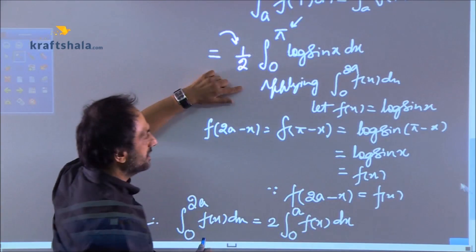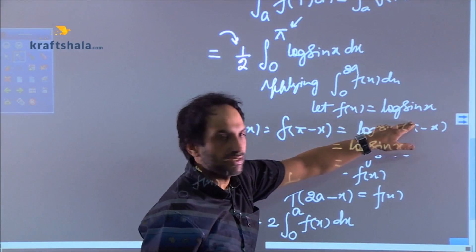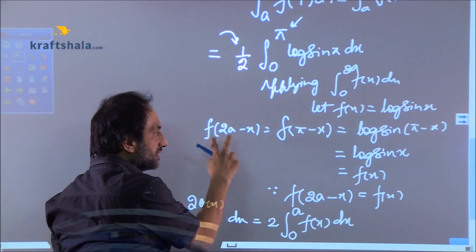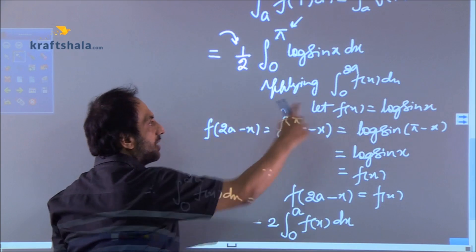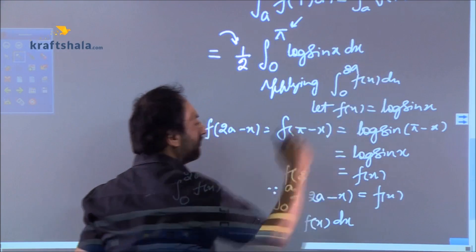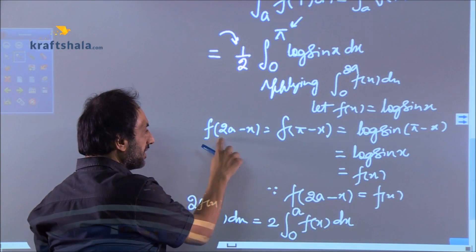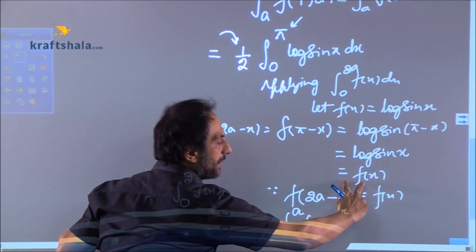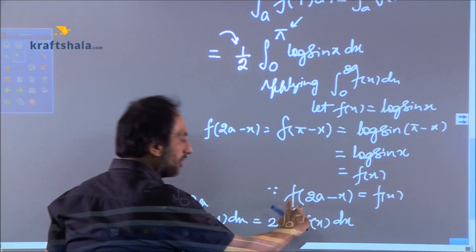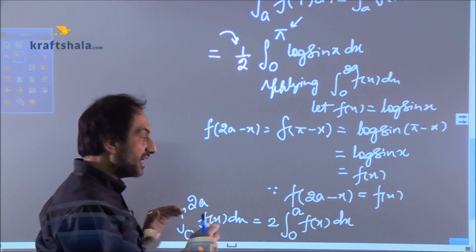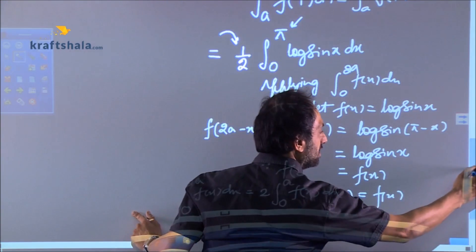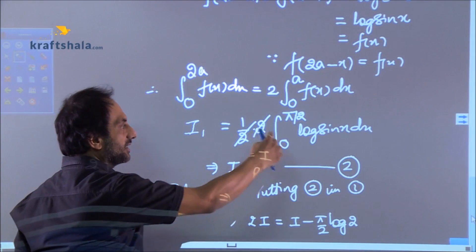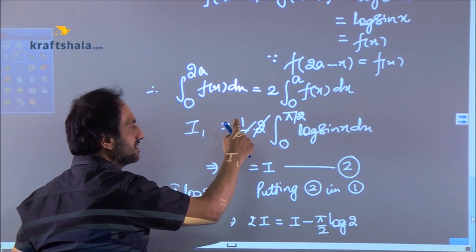For that what we did we took f(x) = log sin x and we applied f(2a - x). So this is very important because now we are using 0 to 2a f(x) dx. After applying f(2a - x) and keeping 2a as π we were back on f(x) and we got that f(2a - x) is f(x). So this is the point where we change the limits rather we broke the limits to 50 percent.